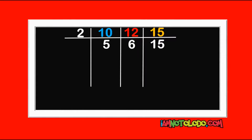2 can still divide 6, but it cannot divide 5 and 15. Since it can divide 6, we can still use it. 2 cannot go into 5, so write it down. 2 in 6 is 3. 2 cannot go into 15, so write it down. 2 cannot divide 5, it can't divide 3, but the next number that can divide them is 3, so we are going to use 3.